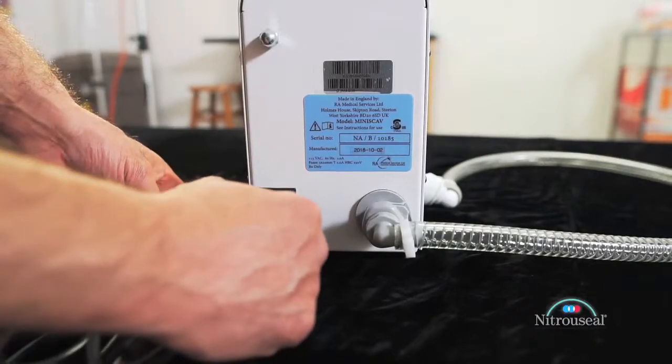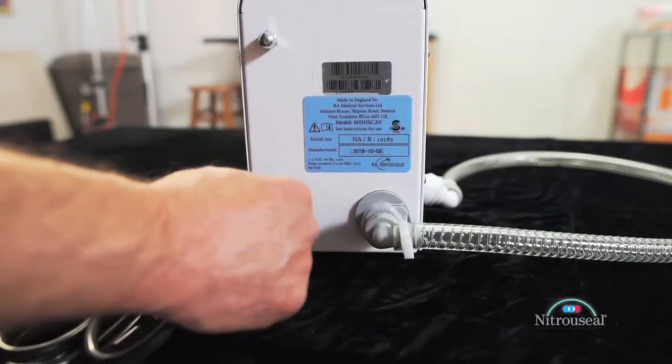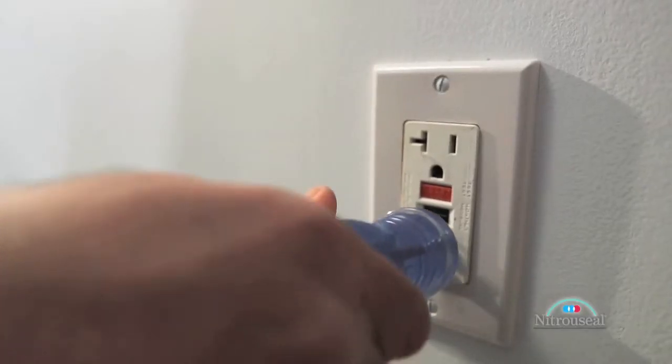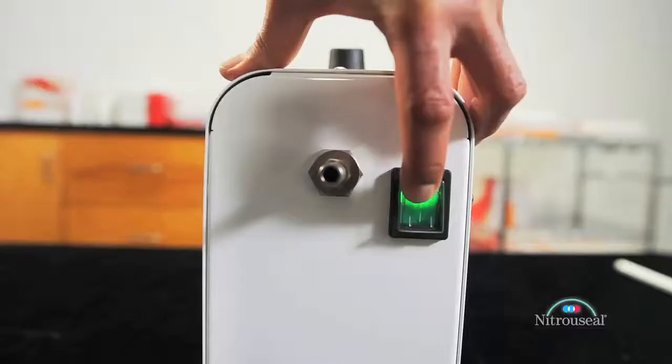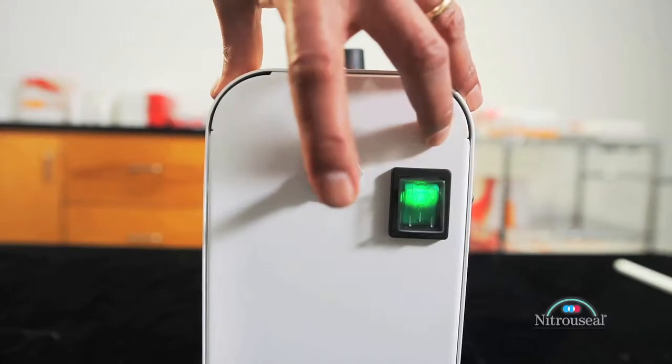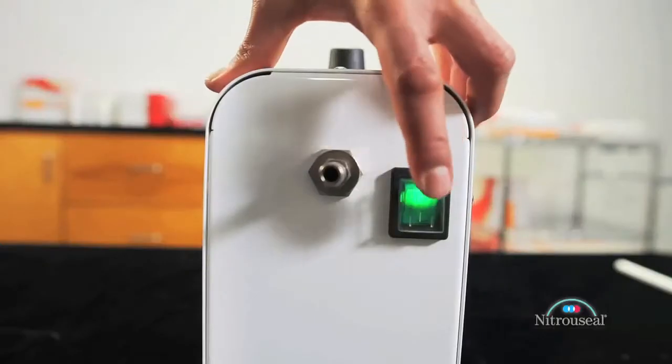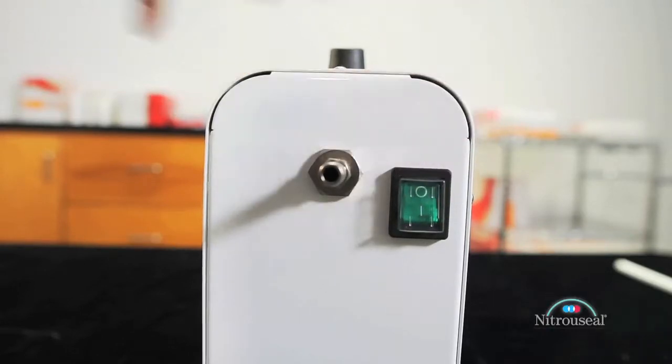Attach the electrical power cord into the rear panel of the Mini Scav. Then plug the power cord into a wall-mounted electrical receptacle. Test the Mini Scav by activating the on-off rocker switch and placing a finger over the suction nozzle. You should feel the suction. Remove your finger and listen to ensure the pump is functioning properly. Turn the power switch off.